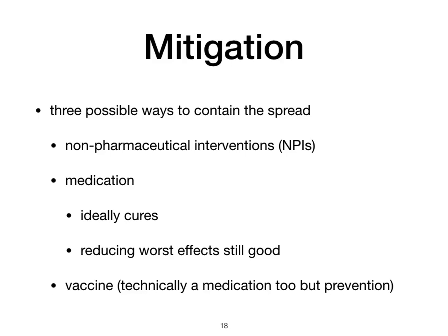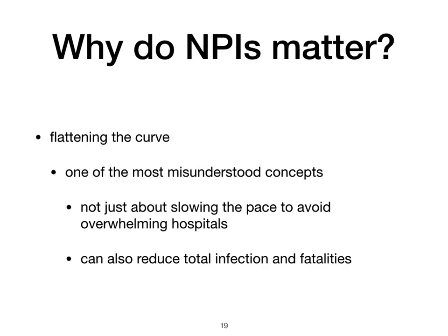So how do we contain the spread? There are three basic strategies: non-pharmaceutical interventions (NPIs), vaccination, and medications — cures or reducing the worst effects. My focus here is really more on the NPIs. Why they matter goes back to the flatten-the-curve concept, which is one of the most misunderstood ideas. It's not just about slowing the pace to avoid overwhelming hospitals — it can also reduce total infection and fatalities.